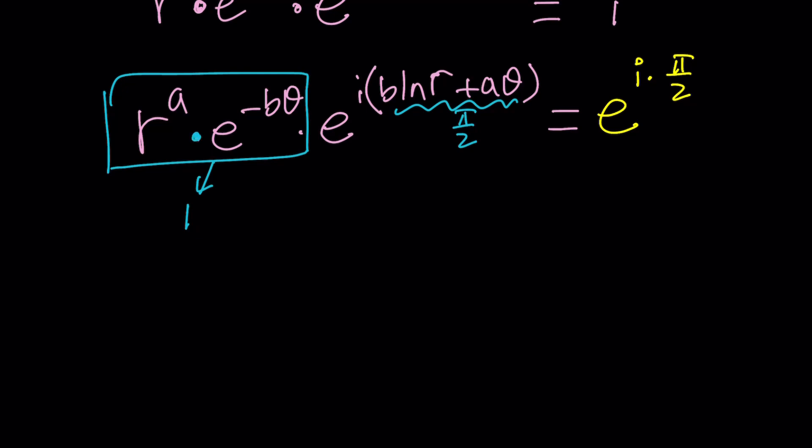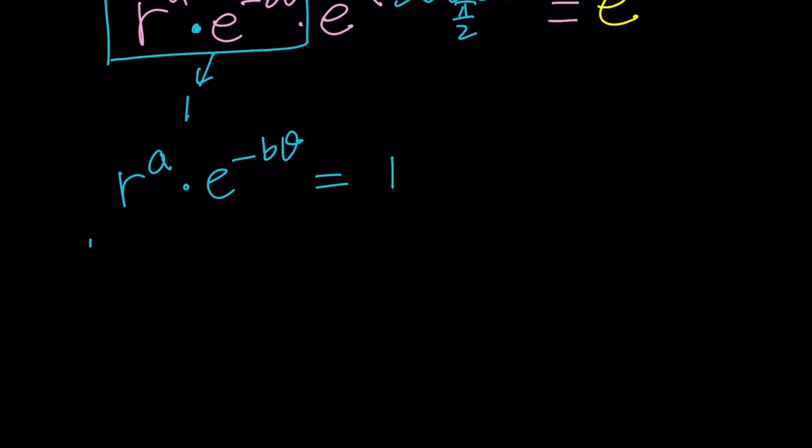Now what does this entail? This means we get two equations from here. R to the A times E to the negative B theta is 1 and then B ln R plus A theta is pi over 2. So that kind of gives us a system but look we have so many variables, right? How are we going to solve this system? Well wait a minute. A, B, R and theta are related. How?